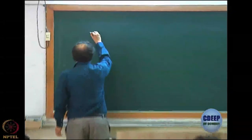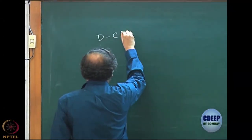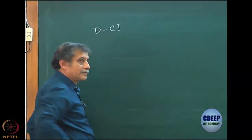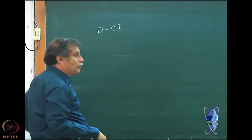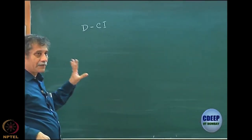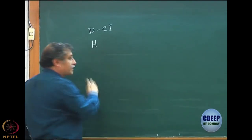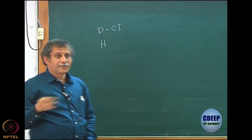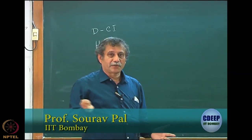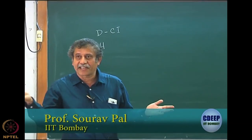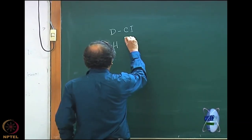We started with DCI, double CI. Let us write down the equations first. Now that we know that the method of projection is the same as the variation method, we are going to use the method of projection to write the equation. We have done that — it is a matrix eigenvalue equation, but I want to rewrite this once more.